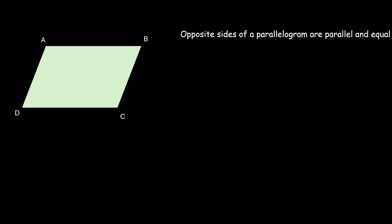We have a parallelogram ABCD. Since it is a parallelogram it has certain properties. The first one being opposite sides of a parallelogram are parallel and equal. So AB is parallel to CD and equal to CD. Similarly, AD is parallel to BC and equal to BC.